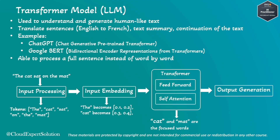The final step is output generation. If we requested a translation, the output layer will generate the translation of the input text. If we requested a summary, it will create a summary. And if we request to continue the sentence, it will also do so.